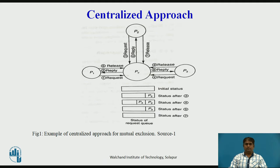Now, suppose that while P1 is in the critical section, P2 asks for permission to enter the same critical section by sending a request to PC. Since P1 is already in the critical section, P2 cannot be granted permission. The coordinator does not return any reply, and the process that made the request remains blocked until it receives a reply from the coordinator. Therefore, PC does not send a reply to P2 immediately and enters its request in the request queue.